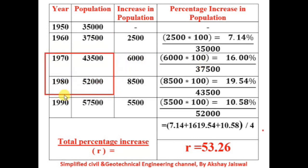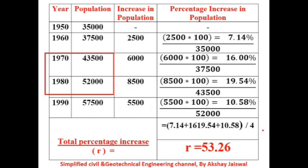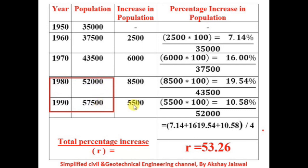Now we find the difference in population from 1970 to 1980. After taking the difference between these two population values, we get an increase of 8,500. And finally, the increase in population from 1980 to 1990 is calculated by taking the difference between the two values: 57,500 minus 52,000 gives us 5,500.